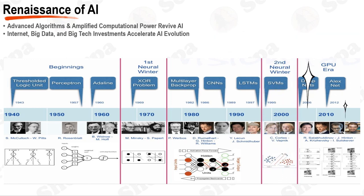The AI research revival post the second AI winter was driven by a synergy of factors. Advanced algorithms like support vector machines and recurrent neural networks emerged in the late 1990s and early 2000s. Concurrently, technological advancements boosted computational power, allowing for the training of complex neural network models. The surge of the internet and big data fueled data-driven AI algorithms, enabling sophisticated tasks such as image recognition and natural language processing. Lastly, tech giants like Google, Facebook, and Amazon started investing heavily in AI research and applications, accelerating advancements in the field.